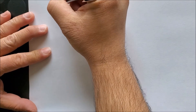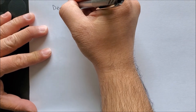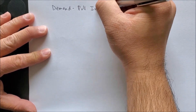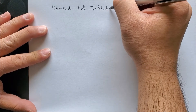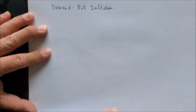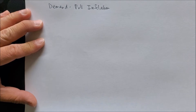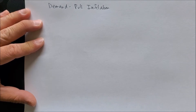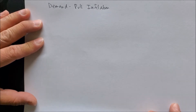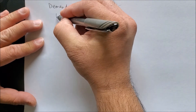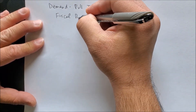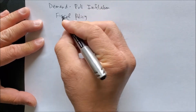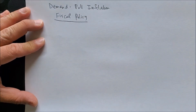Today we're going to talk about demand-pull inflation, focusing on the perspective of government spending known as fiscal policy. We also know that demand-pull inflation could be affected by other components — consumer spending, investment spending, and exports — but today we're going to focus on fiscal policy, that of government spending.